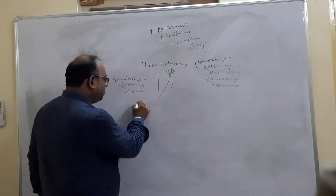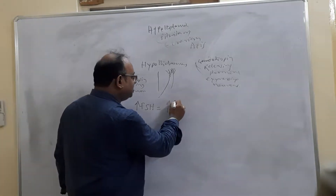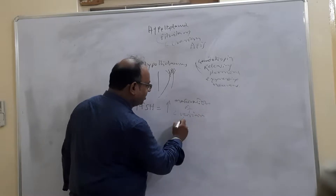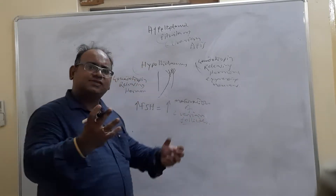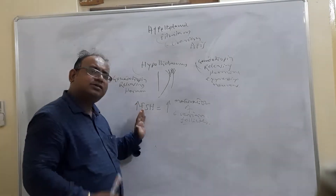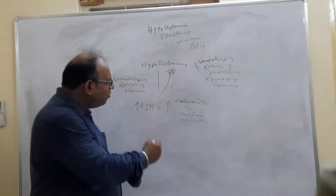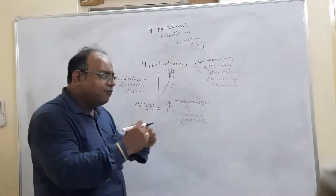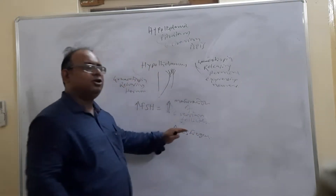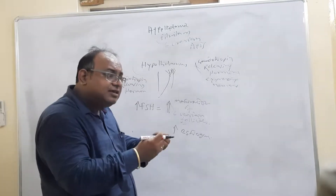More is the release of follicle-stimulating hormone, more will be the maturation of the ovarian follicles. Ovarian follicles reside within the ovary. More is the release of FSH from the anterior pituitary, more is the maturation of ovarian follicles within the ovary, and more is the production of a hormone called estrogen.